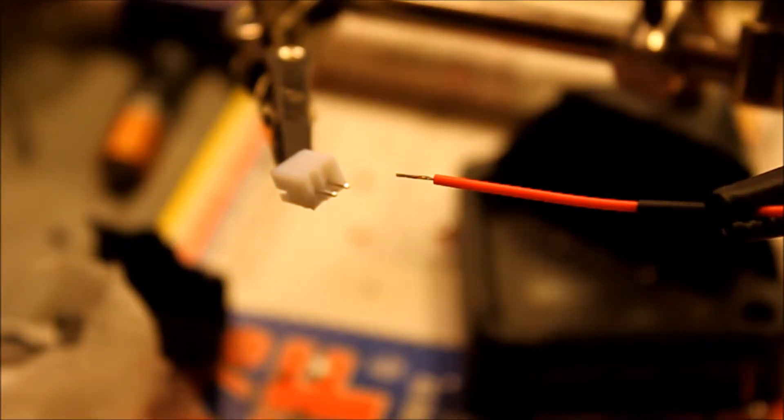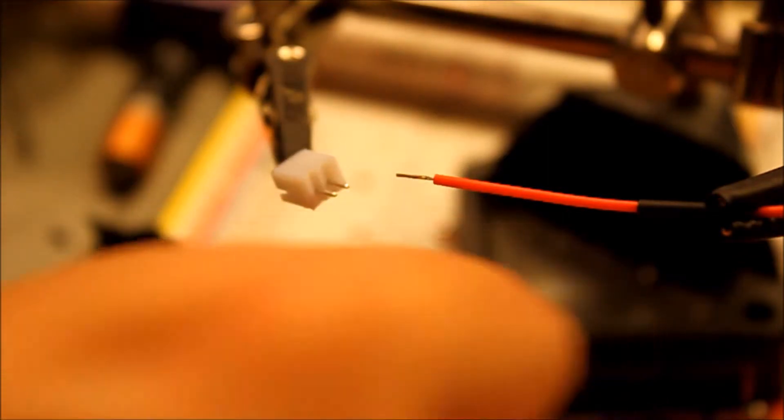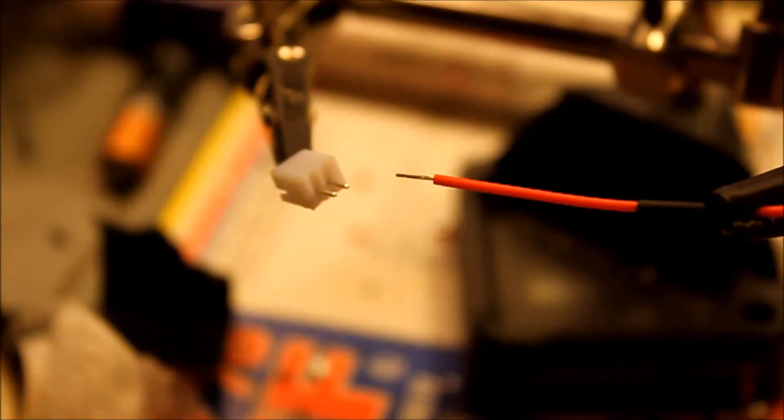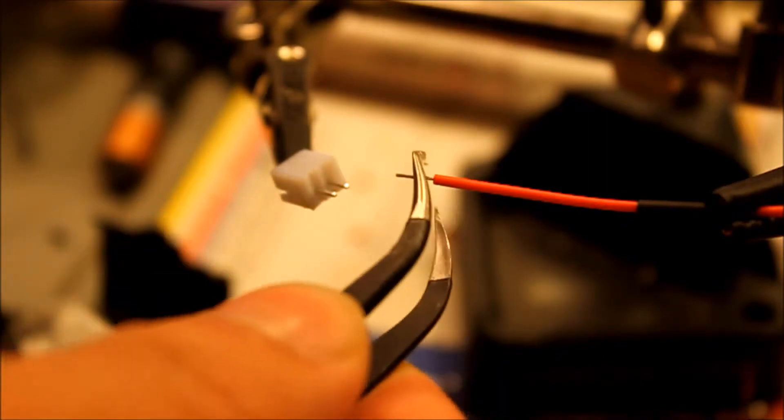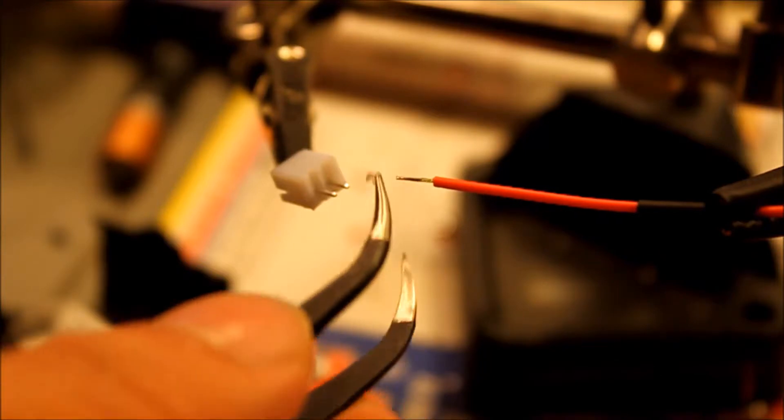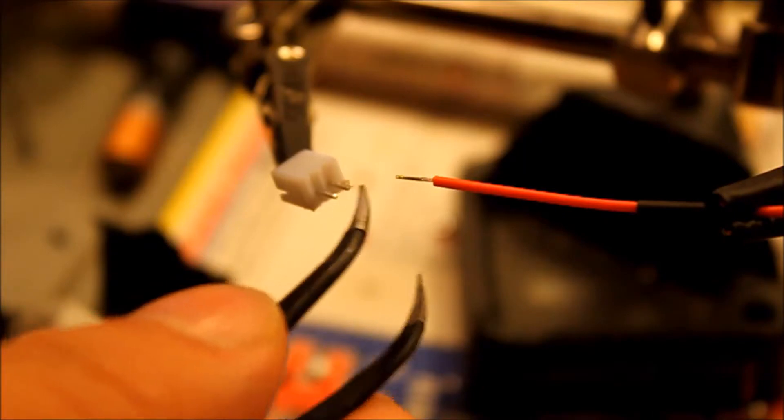You would use either the flux pen or the paste. A lot of people have the paste, so I think it's preferred. Alright, so I'll just use a small dab of paste. I'll just grab a tweezer and gently rub it across the area, and I want to put it across this connection over here.